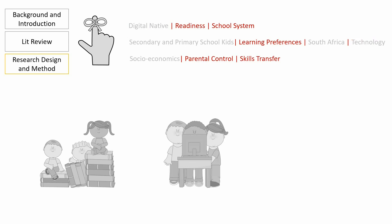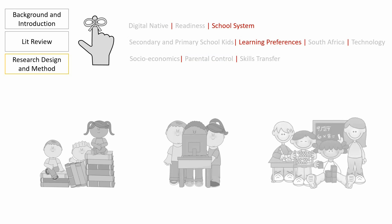We can ask them about their proficiency regarding the use of technology at home and at school. We do this to establish if they have the skills to adapt to a radically changed school system where technology is concerned. This means we have means to establish their readiness and will have data to run tests on their skills transfer correlations. We will also ask them if their habits of using technology are restricted at either location, meaning we have data on parental control — not just at home but also their pseudo-parental control at school. We will also ask them how they prefer to learn: what tech they are currently using in the classroom and if they would like to use anything else. That takes care of learning preferences and school system.